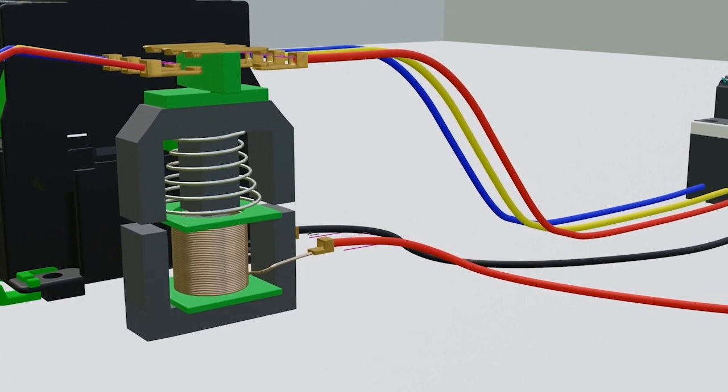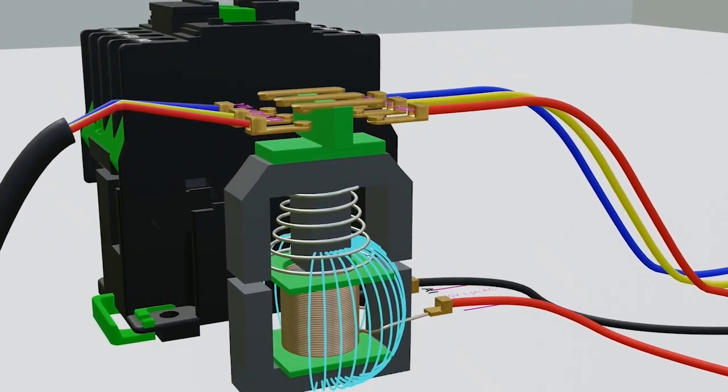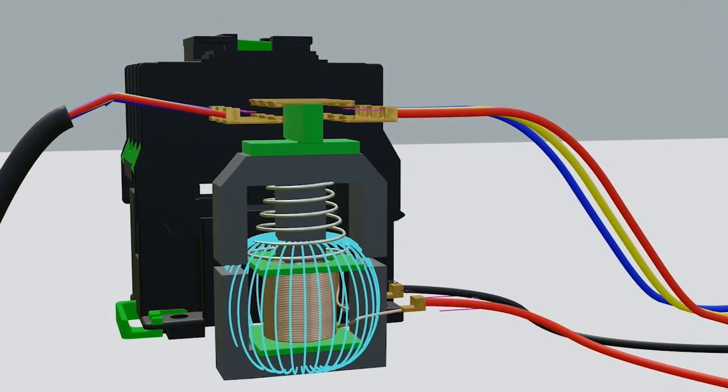As you see here, neutral is directly connected to A2 as shown here. Again, coil gets supplied and the coil will be energized and produce a magnetic field.